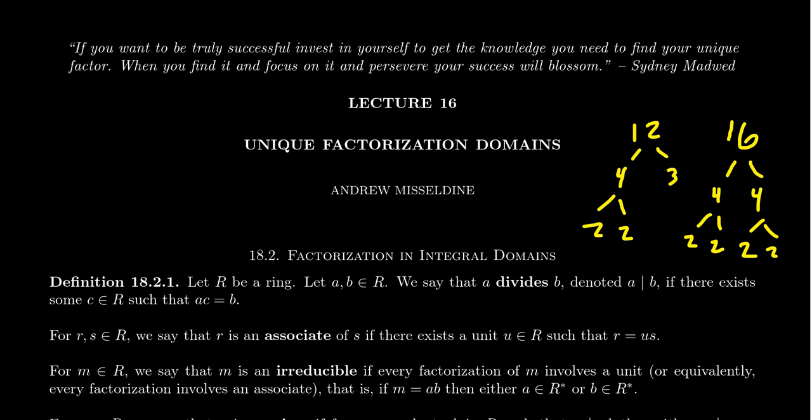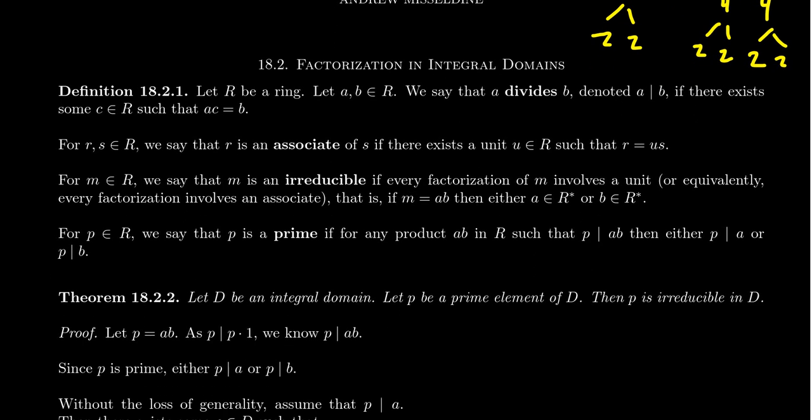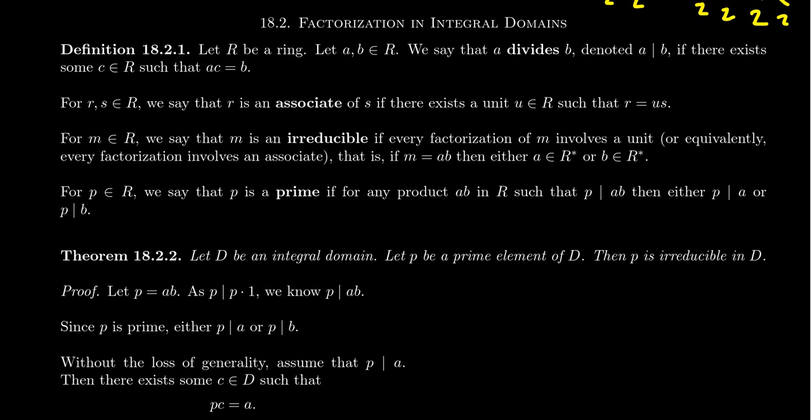In this lecture 16 and in the coming lectures as well, we want to start developing the notion of factorization and divisibility for the general category of rings — or more specifically, commutative rings with unity. And even more specific than that, we're really going to be talking about integral domains, because it turns out that outside of an integral domain, factorization can be very strange. It doesn't exactly behave the way we're used to from our primary education.